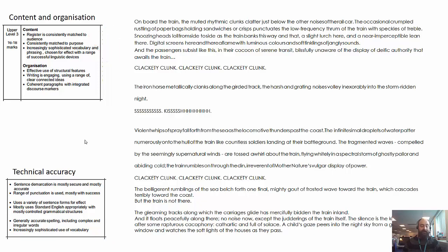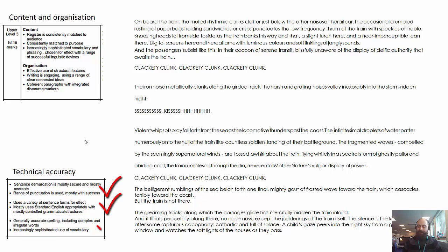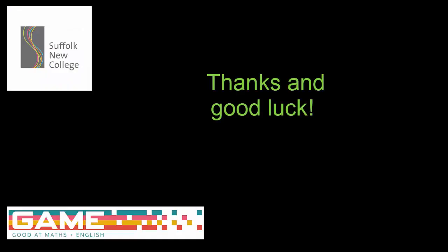Looking at the technical accuracy criteria, I've used a range of punctuation — for example, brackets and semicolons, which are irregular pieces of punctuation — and I've tried to use them for effect rather than just squeezing them in randomly. I've got a variety of sentence forms, and the spelling, punctuation and grammar is accurate throughout. So thanks very much for watching, and I hope this has given you some really good guidance on how to write an effective piece of descriptive writing. Good luck!